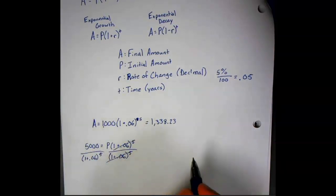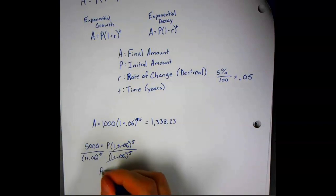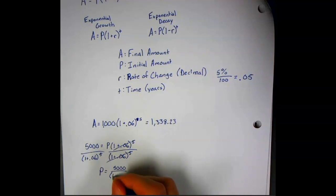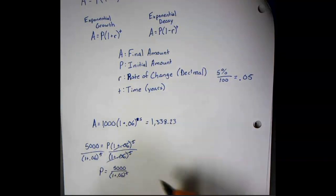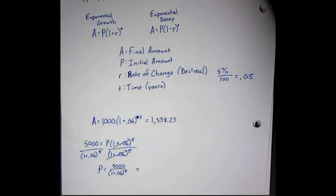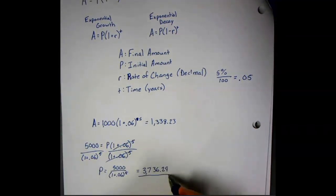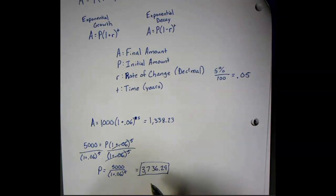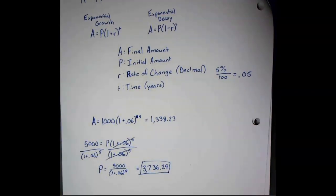Getting rid of it on the right side, and we have P equals 5,000 over that. And now you'd be able to plug this into your calculator and get your answer. And in this case, that would be 3,736.29.